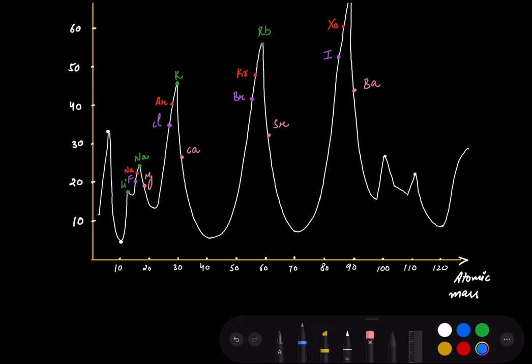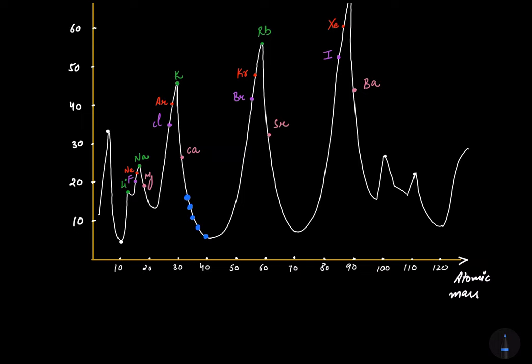Transition elements are marked here, here, and here — at the broad minima of the curve. These are the positions for the placement of transition elements on Lothamere's curve.